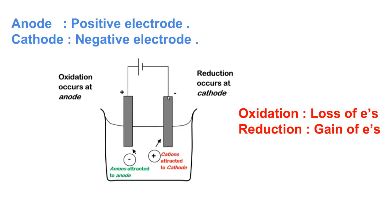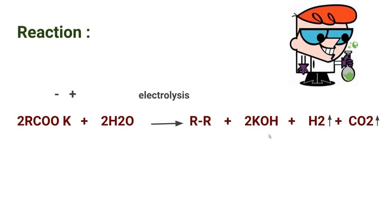Oxidation occurs at the anode — that is the loss of an electron — and reduction occurs at the cathode — that is the gain of an electron. Oxidation state is the total number of electrons that an atom either gains or loses to form a chemical bond. Whenever there is a loss of electron, the oxidation state increases (becomes more positive), so oxidation has taken place. Whenever there is a gain of electron, the oxidation state decreases (becomes more negative), so reduction has taken place.